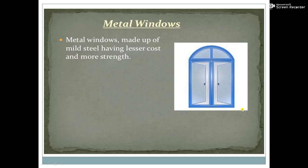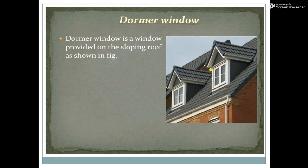Metal windows are made up of mild steel, having lesser cost and more strength compared to timber or glass windows. The next is the dormer window. The dormer window is a window provided on sloping roofs, as shown in the figure. On the sloping roof, for ventilation or lighting purposes, these types of windows are provided, which are known as dormer windows. This allows the entry of fresh air and light into the structure.